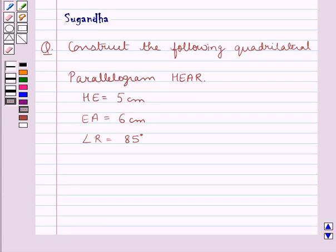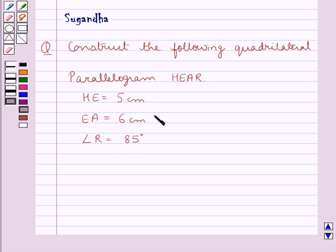Hello and welcome to the session. Today I will help you with the following question. The question says: construct the parallelogram HEAR where HE is 5 cm, EA is 6 cm and angle R is 85 degrees.